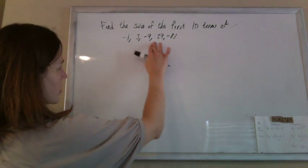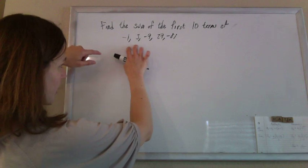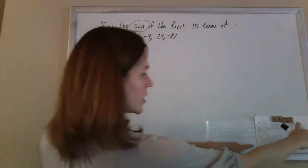This is a geometric sequence. I'm multiplying by negative 3 every time. I'm looking for the sum of a geometric sequence.